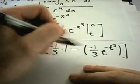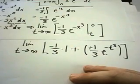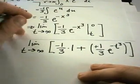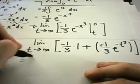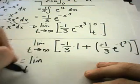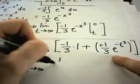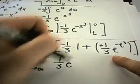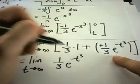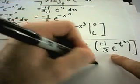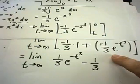Alright, so now we could definitely cancel out the negatives and make that a positive. I'm just going to rewrite this. I've got the limit as t goes to infinity. I have one third e to the negative t cubed minus one third.